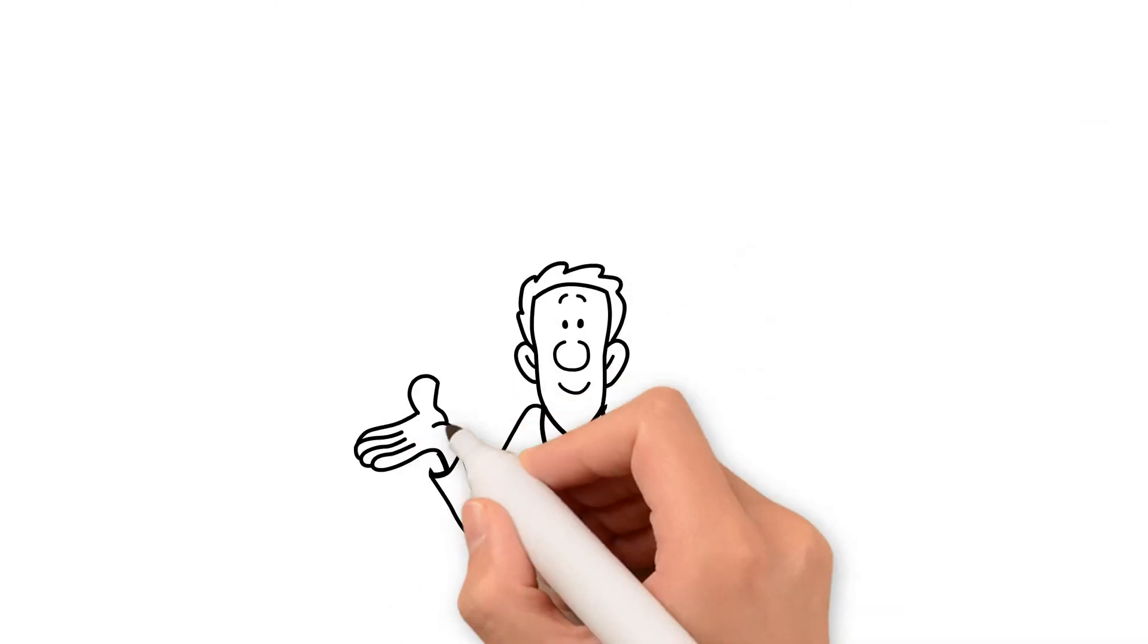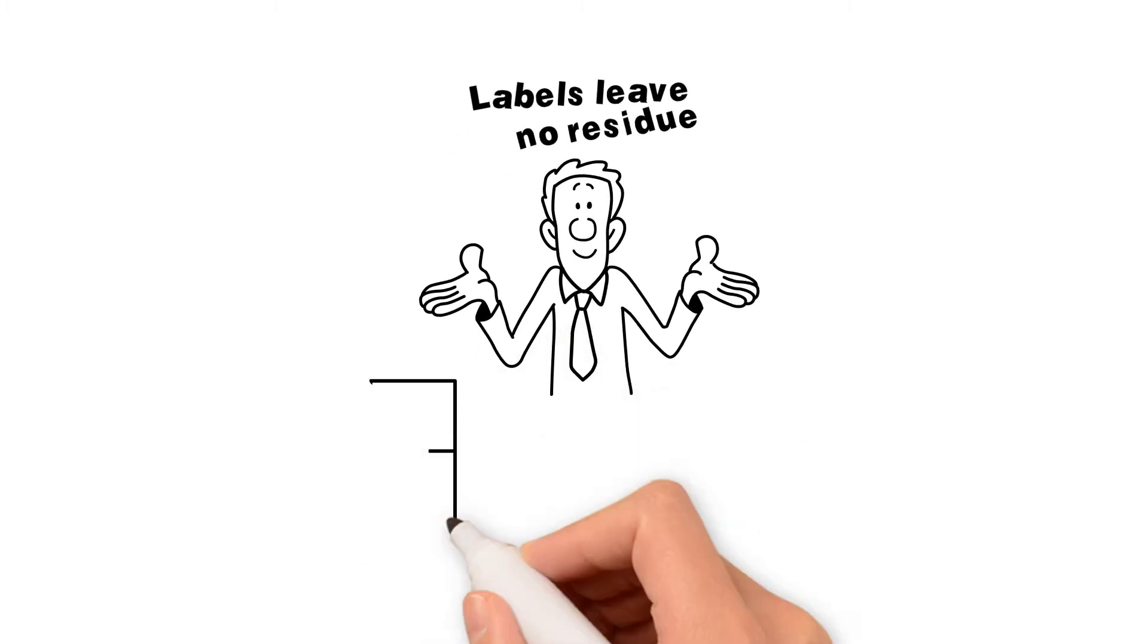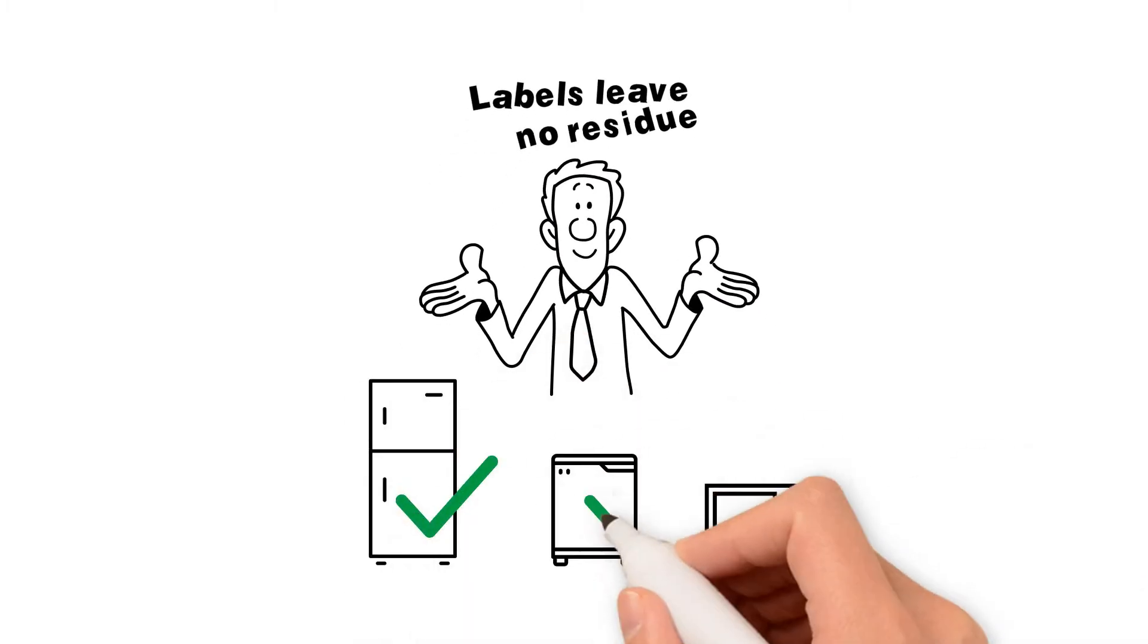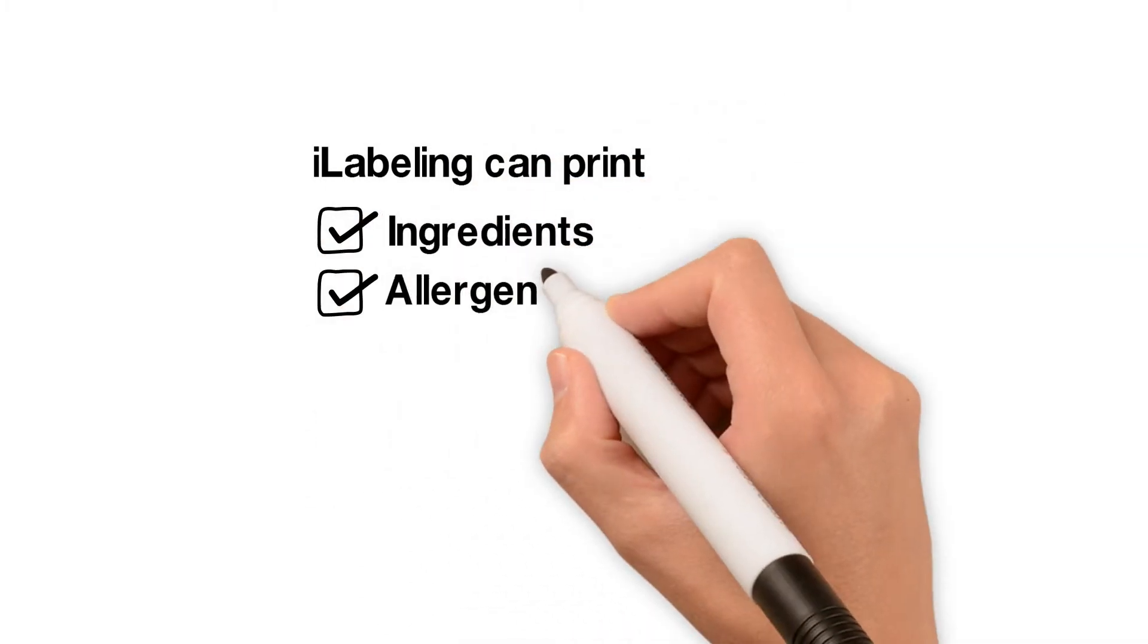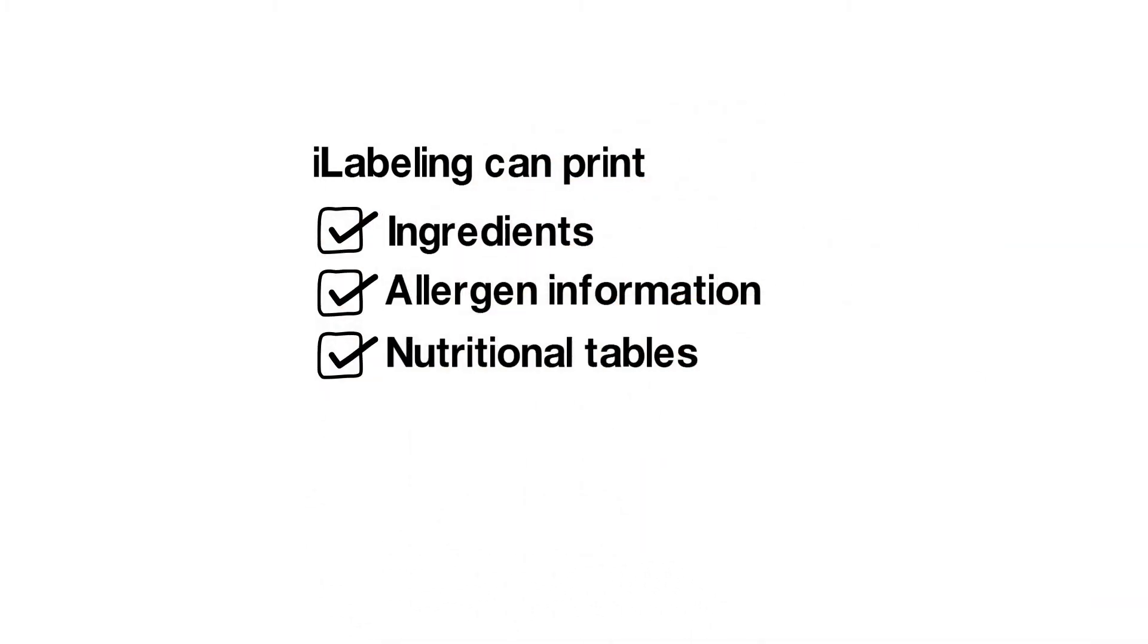Labels leave no residue and can go in fridge, freezer, or hot ovens. iLabeling can print ingredients, allergen information, and nutritional tables as well.